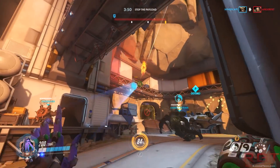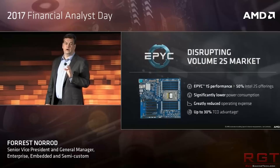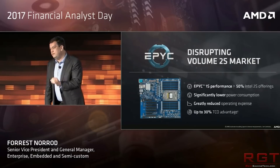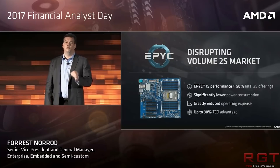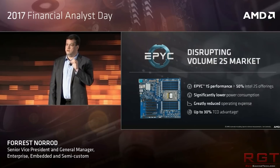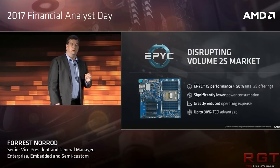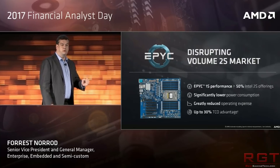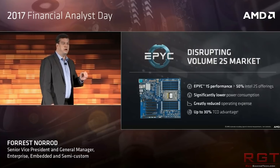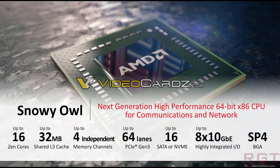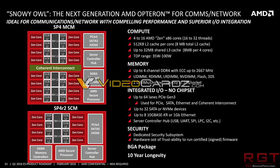We'll start with AMD's Snowy Owl, which by the way is a very cool name — it is of course a code name. So what is Snowy Owl? It is touted to be the next generation of AMD Opteron processors, specifically geared — although not limited — to usage in communications and networks. According to AMD's official slide, it will offer ideal communications for networking with compelling performance and superior I/O integration.